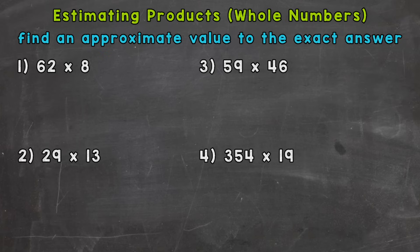And the first thing I want to do, I'm going to use front-end estimation to round 62. And front-end estimation is rounding to the greatest place-valued digit, so the digit furthest to the left. In the case of 62, it's going to be the tens place. So 62 is going to round to 60.